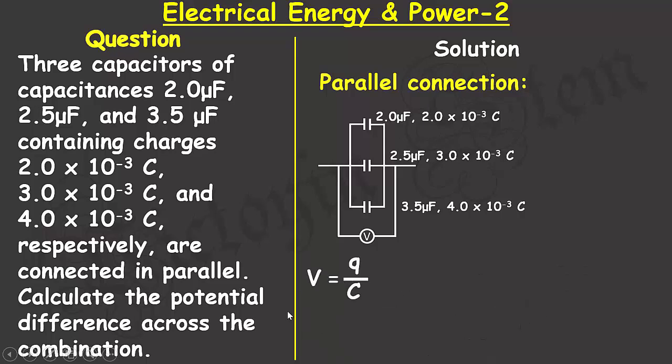Now, to get the potential difference, I can use the formula potential difference equals the ratio of the charge to the capacitance of the capacitors.